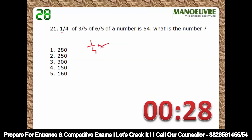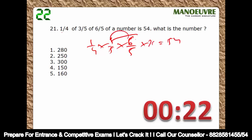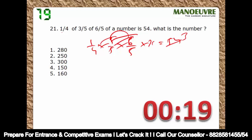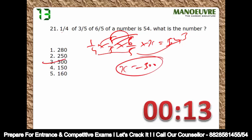1/4 of 3/5 of 6/5 of a number x = 54. 6 × 3 = 18 — get cancelled; this gets cancelled. 18 × 3, so 5 × 5 = 25, 4 × 3 into x = 54. x = 300. Very easy question — 300.